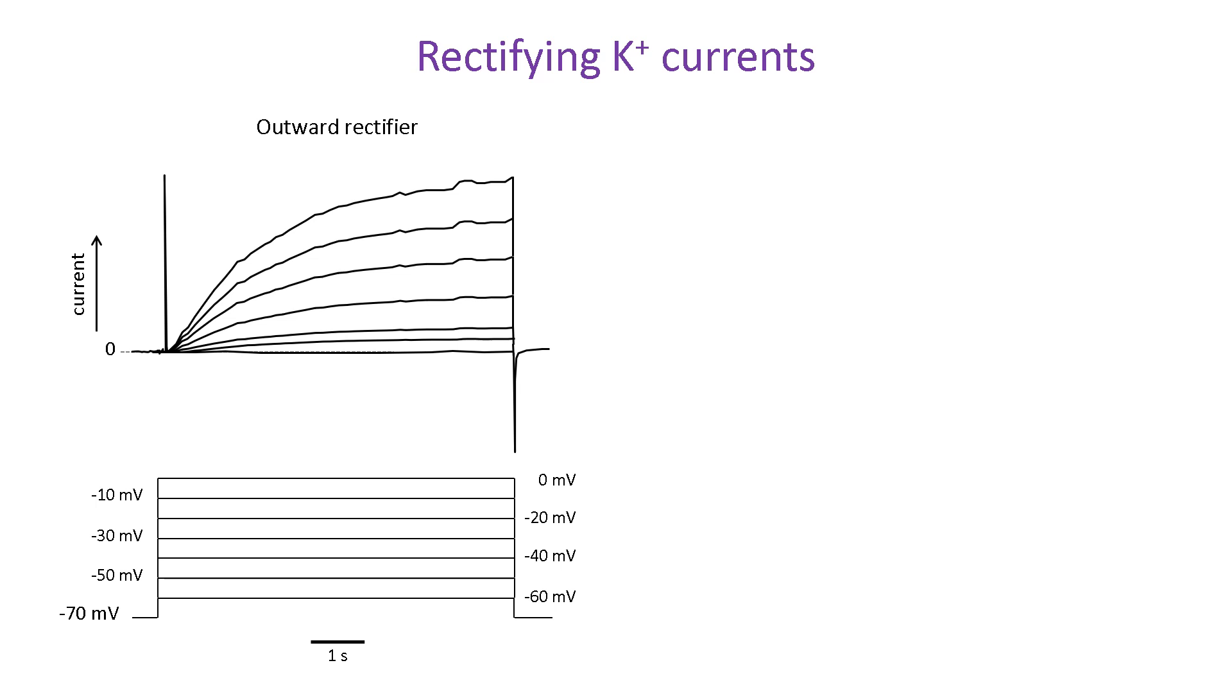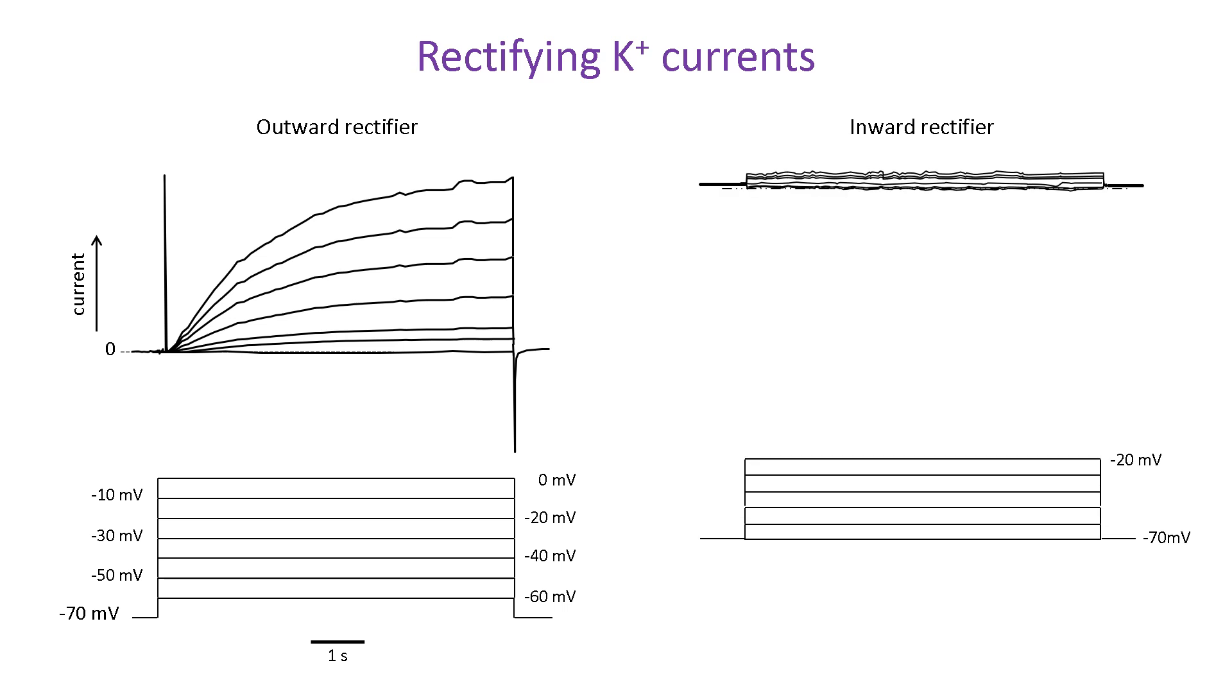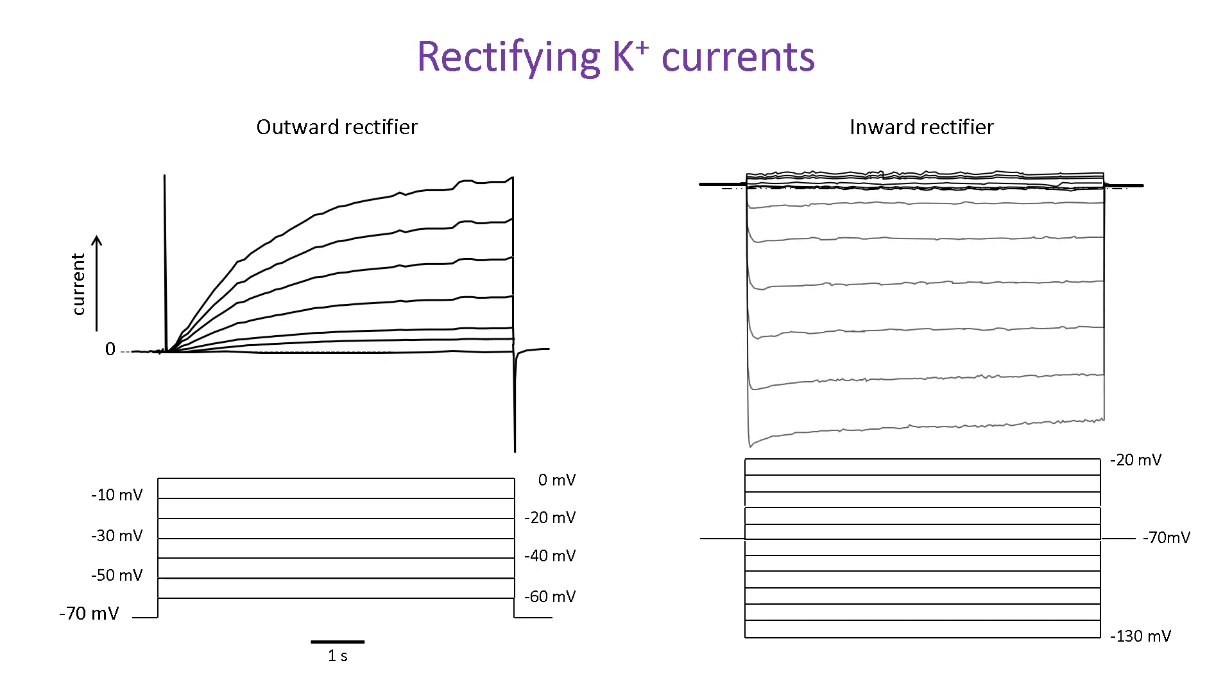Some potassium channels, namely the KIR family, can pass inward current and they are known as inward rectifiers. These currents were recorded from inward rectifier potassium channels using a similar protocol to the records on the left. In this case, the currents activated by depolarizing voltage steps are very small. Now look what happens if the voltage steps go in the other direction and hyperpolarize the cell below the reversal or Nernst potential for potassium. Large currents are now seen moving in the inward direction.